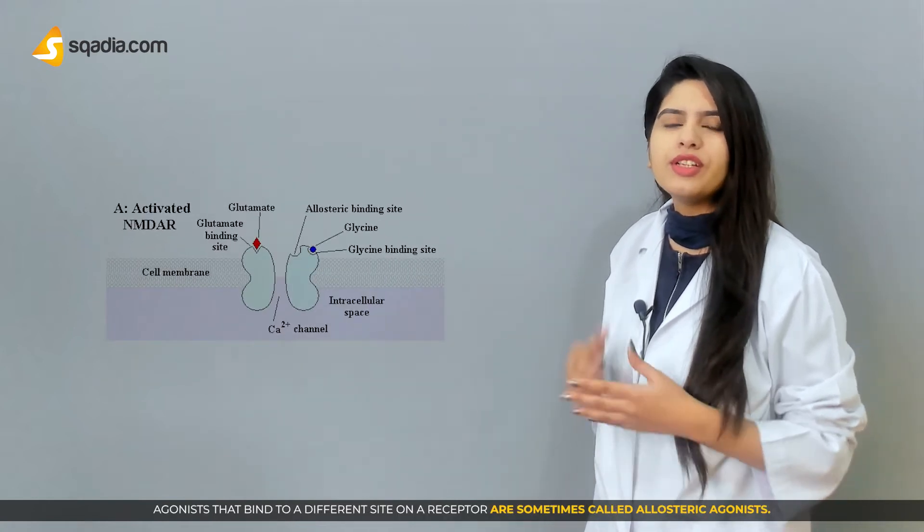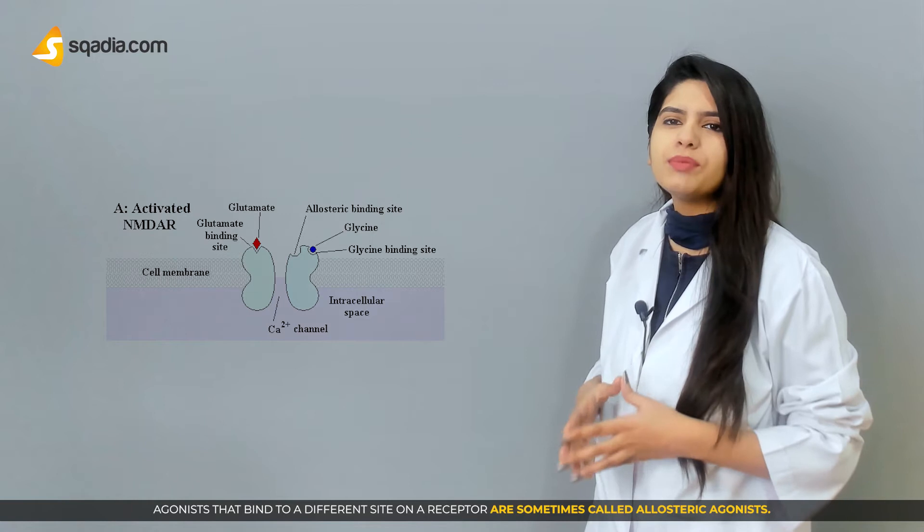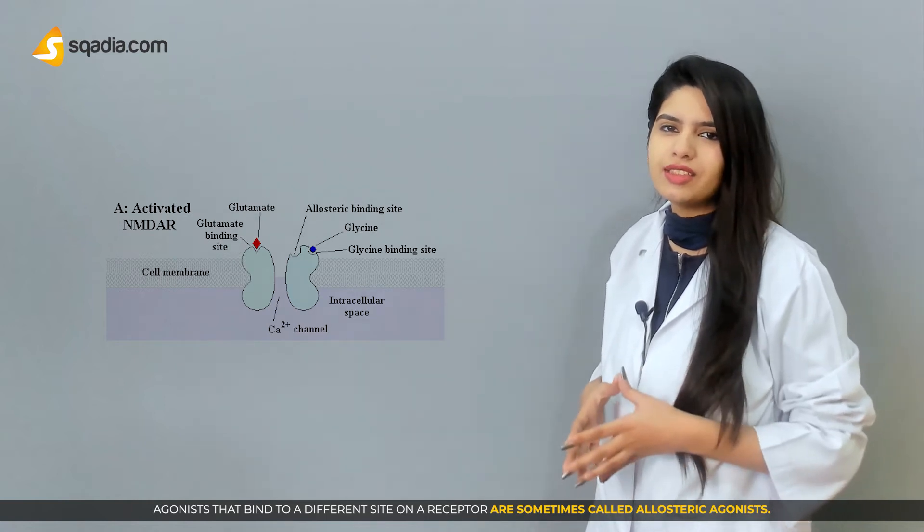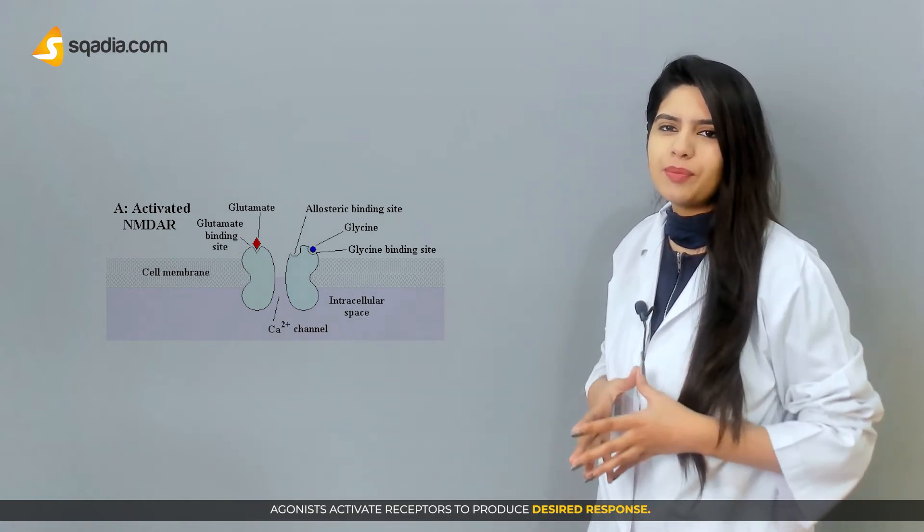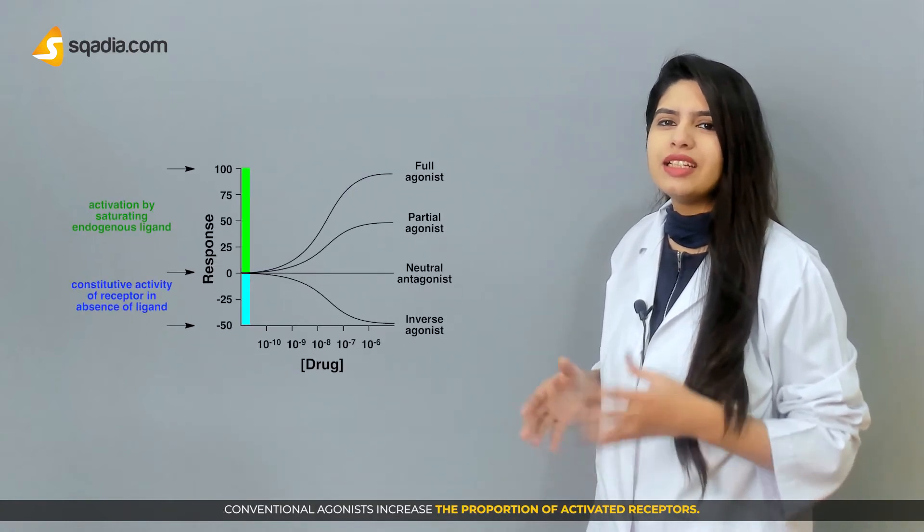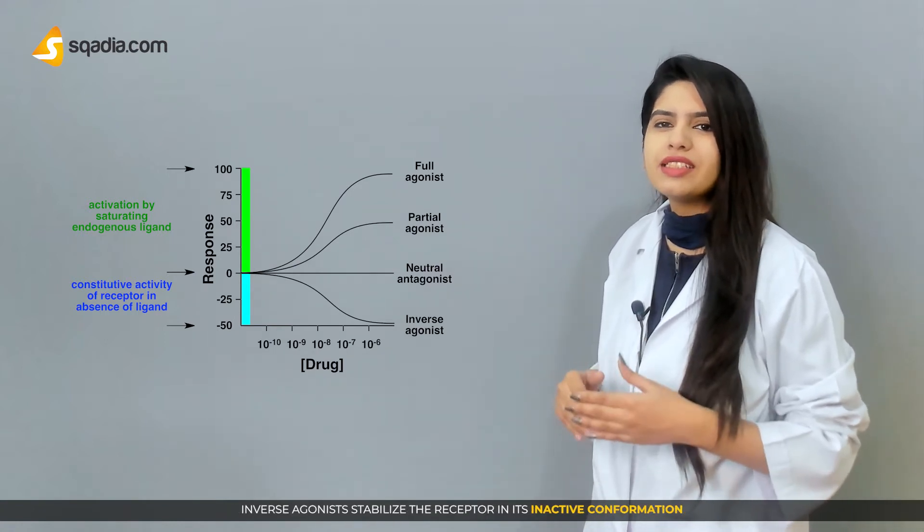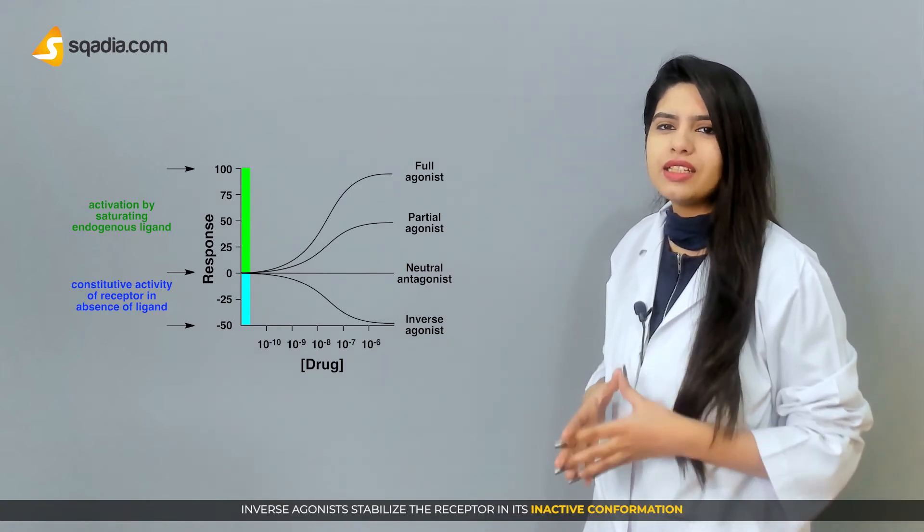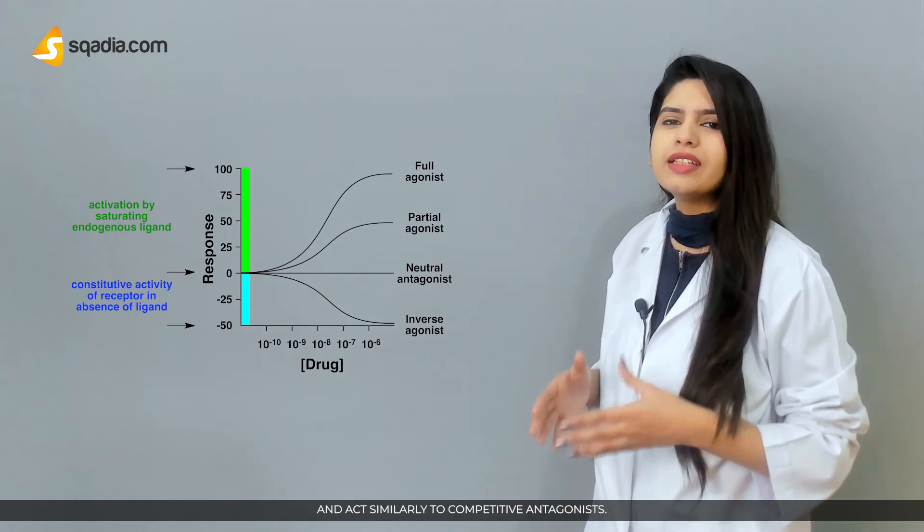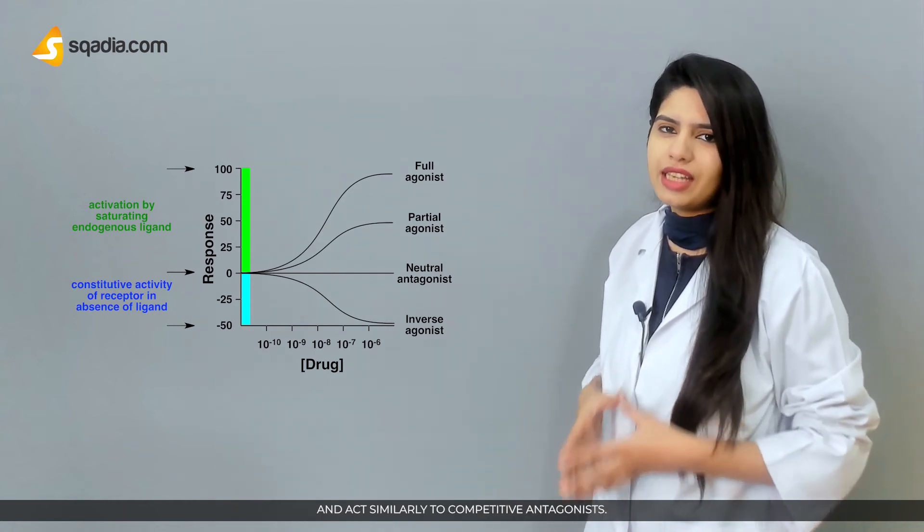Agonists that bind to a different site on a receptor are sometimes called allosteric agonists. Agonists activate the receptors to produce desired response. Conventional agonists increase the proportion of active receptors. Inverse agonists stabilize the receptor in its inactive conformation and act similarly to competitive antagonists.